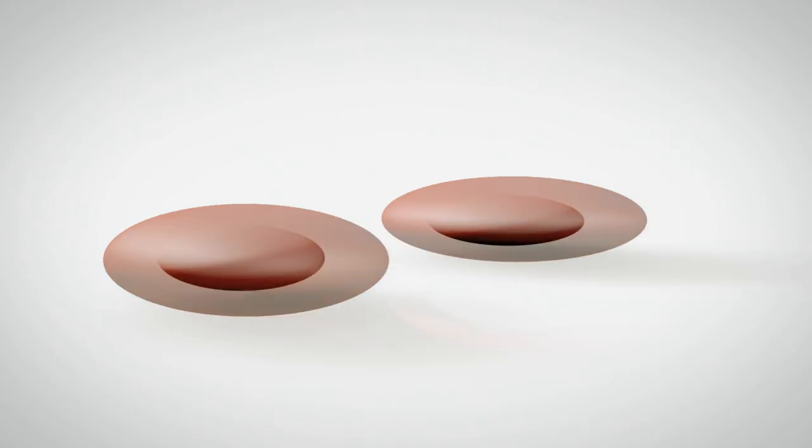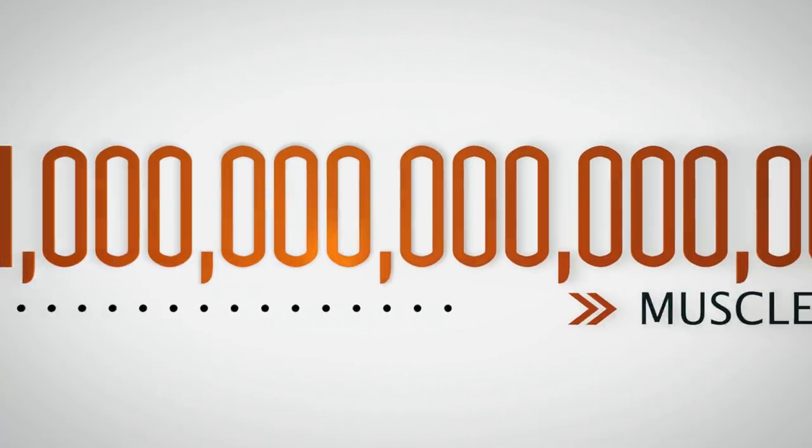The cells start dividing. Eventually, from one muscle cell, more than one trillion cells can be grown.